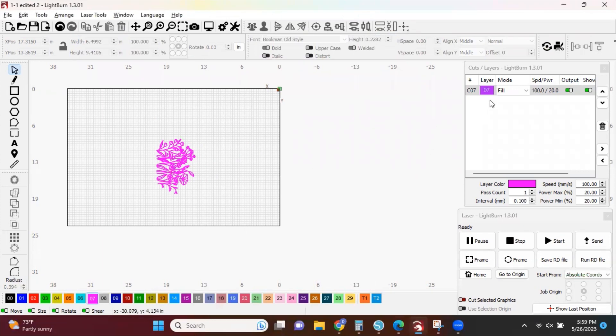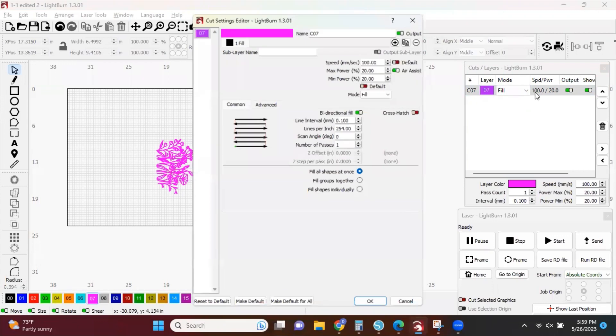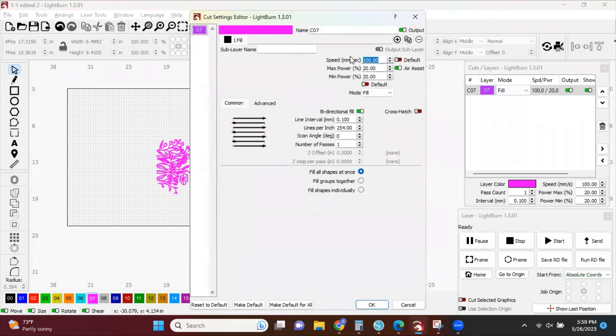After I uploaded my SVG, I made sure that it is rotated clockwise. I have my settings at 400 speed, 45 power, and 400 lpi. Then I click OK.